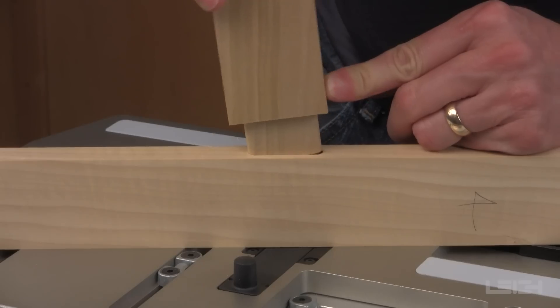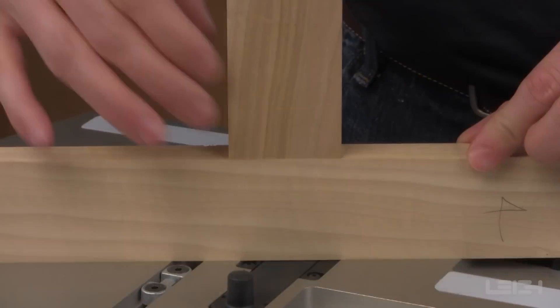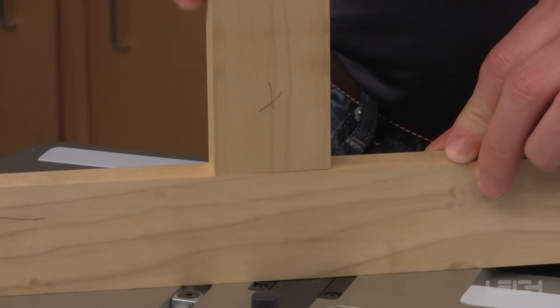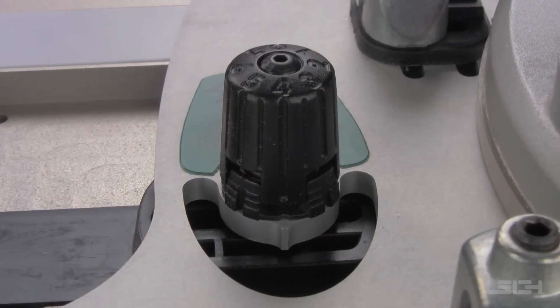With both pieces now complete, insert the tenon in the mortise to test the fit. If the joint is too tight or too loose, the left guide pin knob is used to adjust the fit.